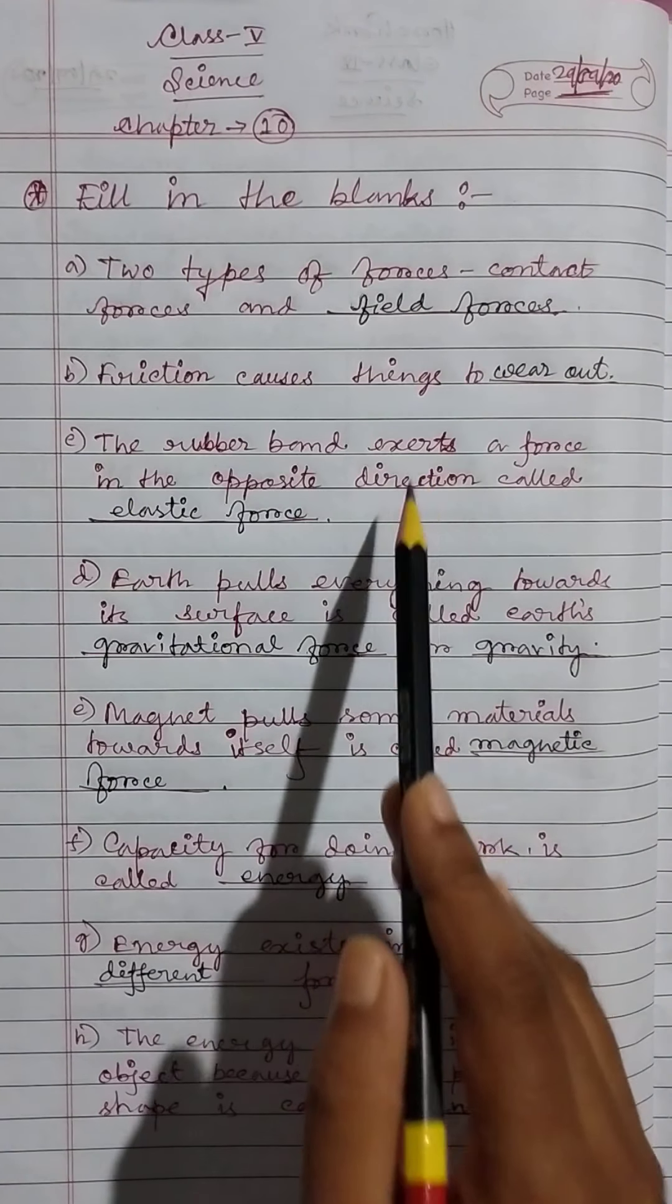A wedge is a simple machine used to split a block. The fulcrum is the support on which a bar is fixed in a lever. Okay, so I conclude the lesson. Thank you.